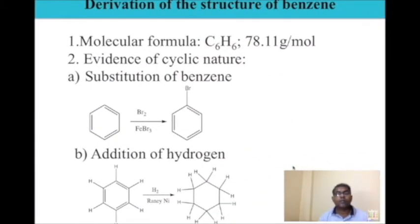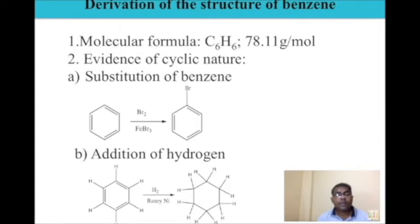Now let us try to derive the structure of benzene, although it will be a partial derivation — I will come with a new video giving the orbital structure treatment. The molecular formula was determined by finding the percentage composition of individual elements and deriving the empirical formula. For benzene it is C6H6, and the molecular weight is 78.11 g/mol. Evidence of cyclic nature: the first is the substitution of benzene. Benzene being cyclic, if you react it with bromine and ferric bromide, it gives a monobromo derivative. This reaction indicates all the carbon atoms in benzene are similar.